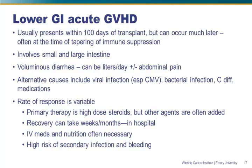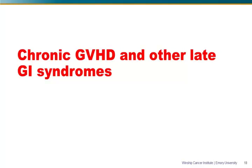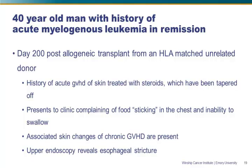Moving on to later post-transplant — our 40-year-old man is now 200 days after allogeneic transplant. He had acute graft-versus-host disease treated with steroids, but the steroids have now been tapered off. He comes into clinic complaining of food sticking in his chest and inability to swallow. He has some skin changes associated with chronic GVHD that aren't very severe, and his upper endoscopy reveals esophageal stricture. This is chronic graft-versus-host disease of the esophagus.